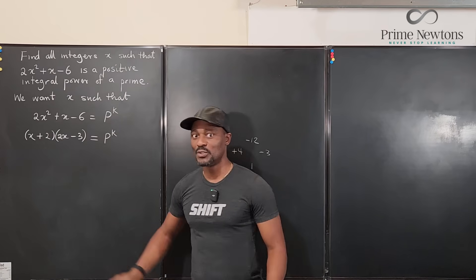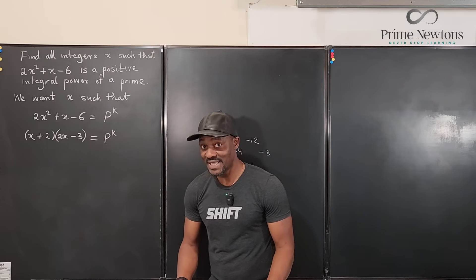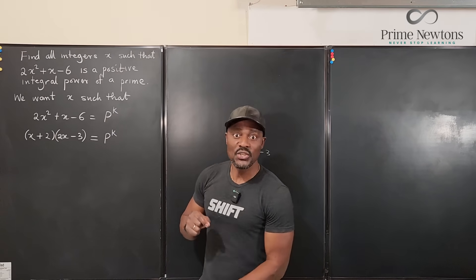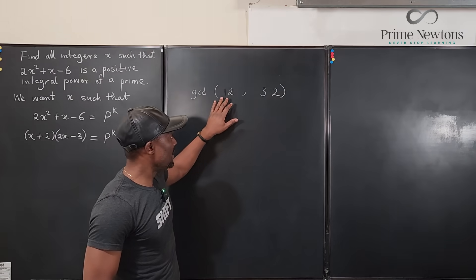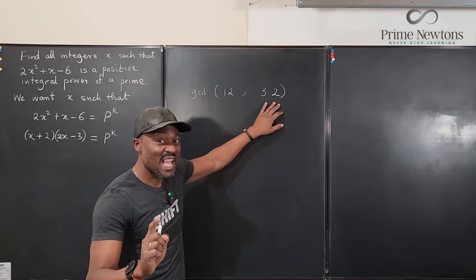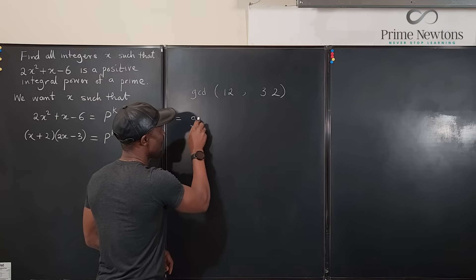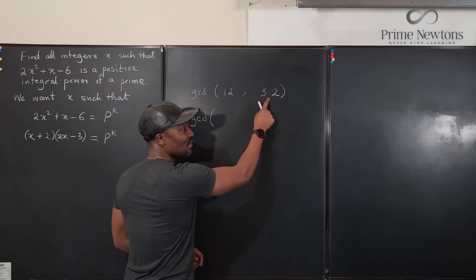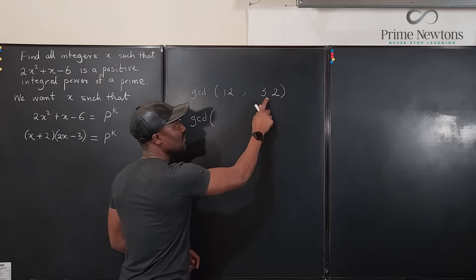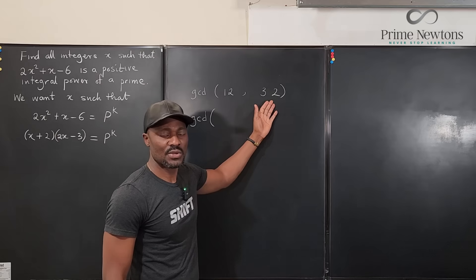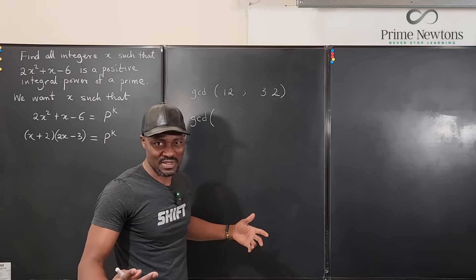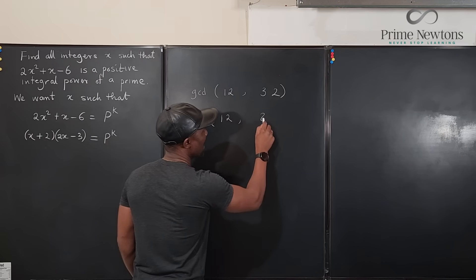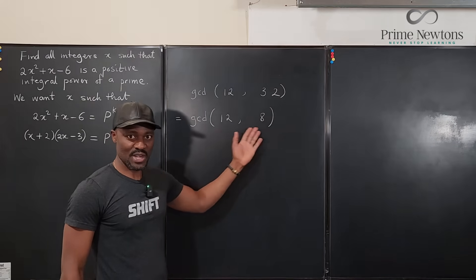So how do we find the greatest common factor of two algebraic expressions? We're going to use the Euclidean algorithm. For example, the GCD of 12 and 32: since 12 is less than 32, subtract as many 12s as possible from 32 — that's two 12s, or 24 — leaving 8. So GCD(12, 32) = GCD(12, 8), which we know is 4.